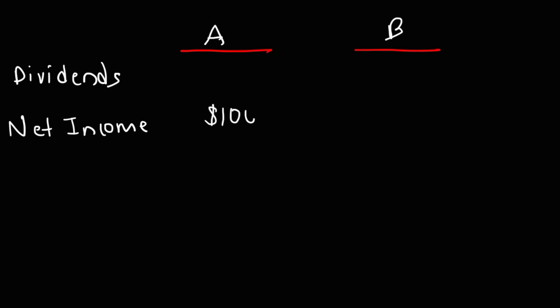So, let's go over some examples. Let's say we have two companies, company A and company B. We're going to say that both companies have the same amount of net income. Just to make the calculation simple, company A has 100 million in net income and company B has 100 million in net income.